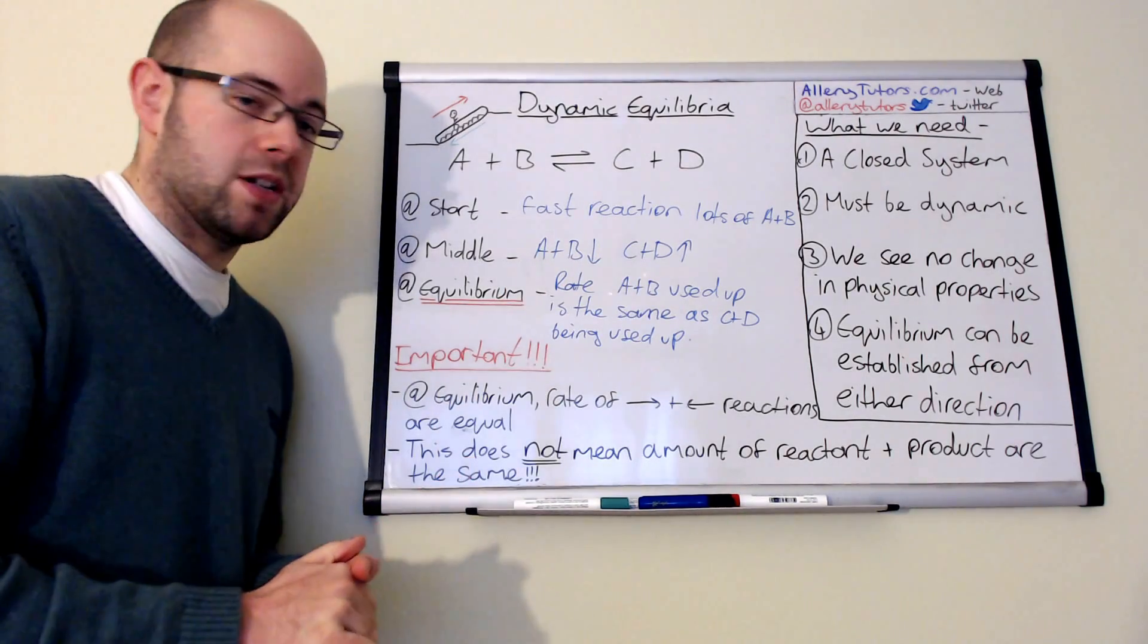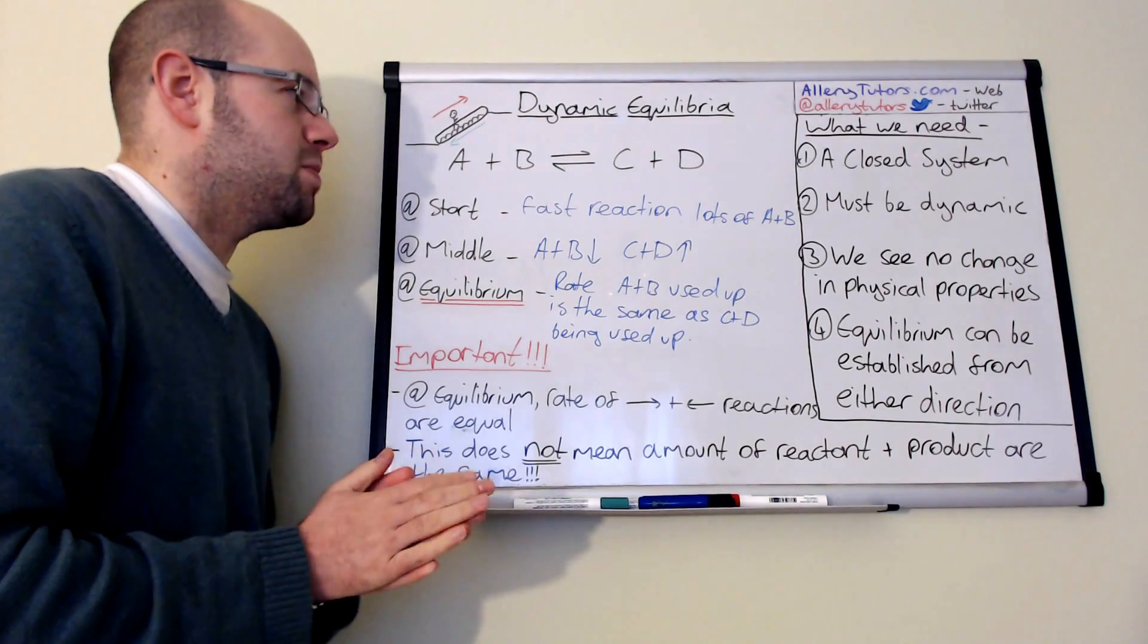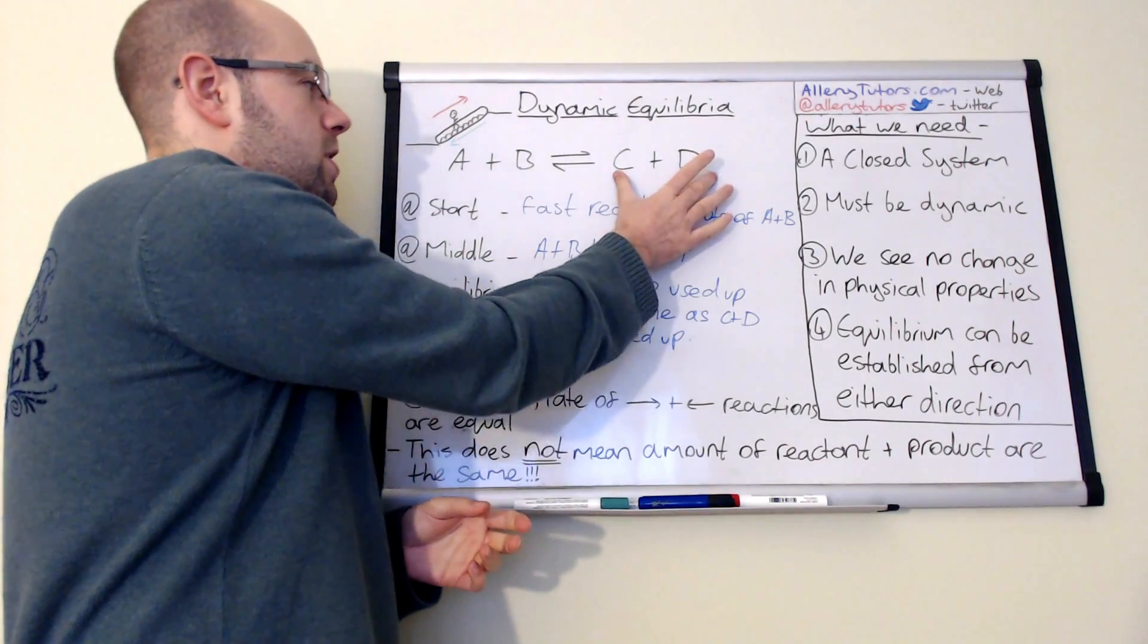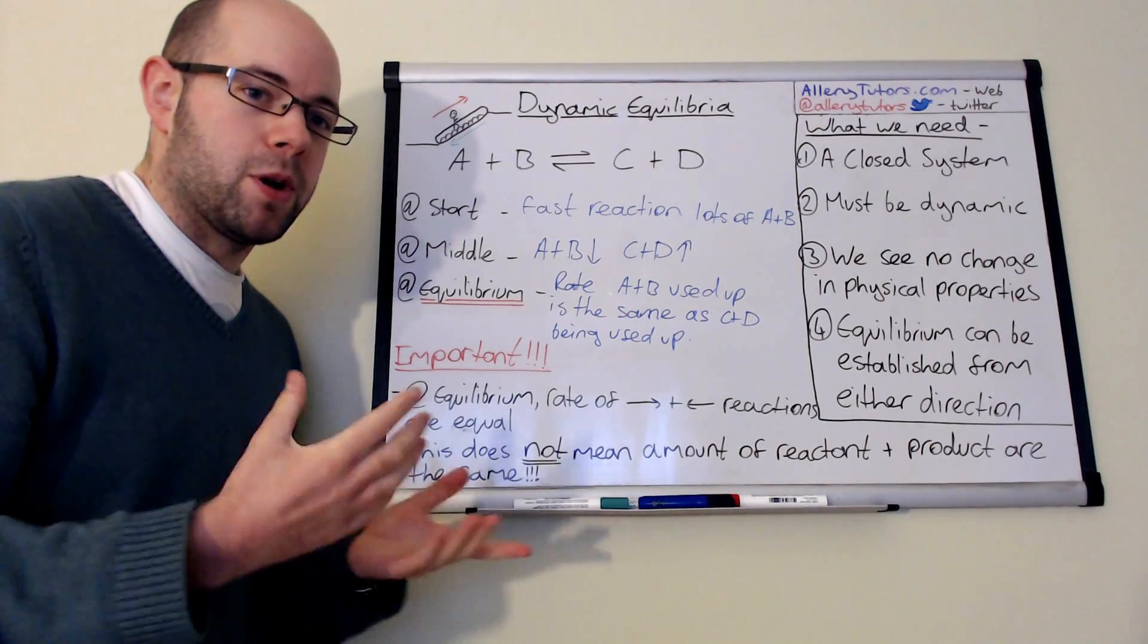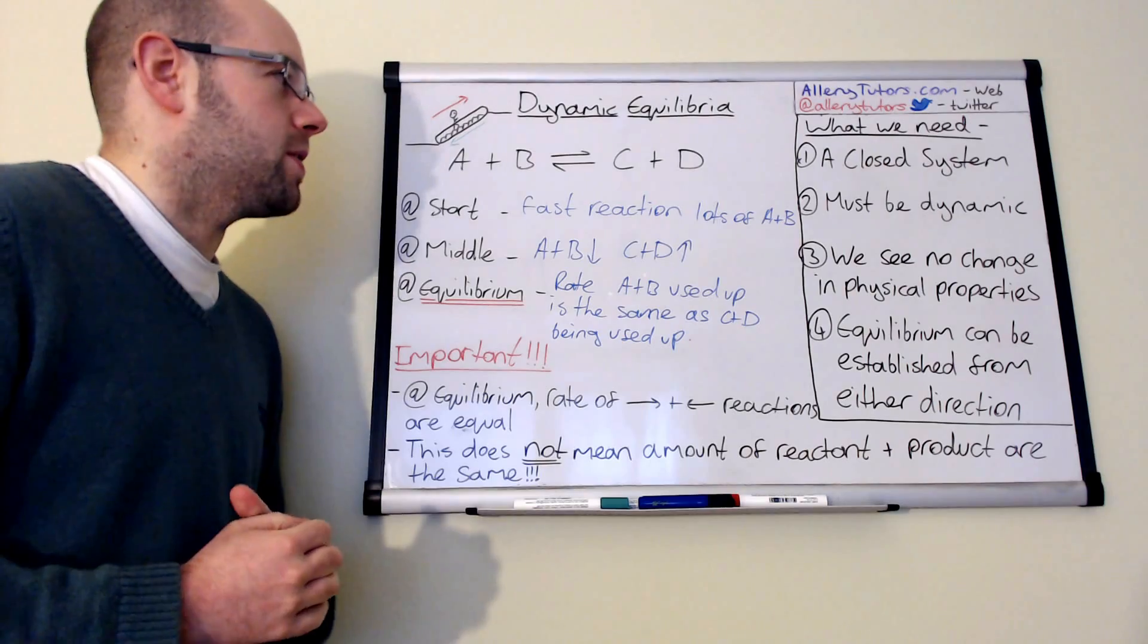In an equilibrium system, the rate is the same, but not necessarily the amount of A and B. And C and D may not be the same. In fact, you may have a lot more C and D than you do A and B, but our reaction can still be in equilibrium, because the rate at which these reactions are occurring are the same.